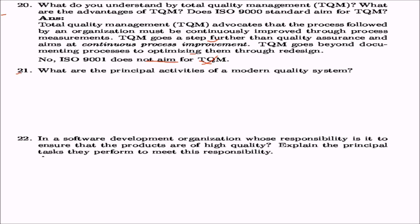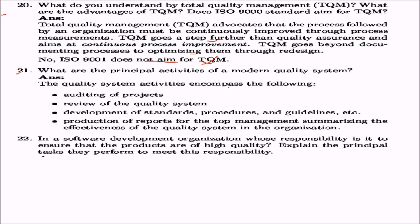What are the principal activities of modern quality systems? The quality system activities include: auditing the project, reviewing the quality system, developing standards, producing procedures and guidelines, and the production of reports for top management summarizing the effectiveness of the quality system in the organization.